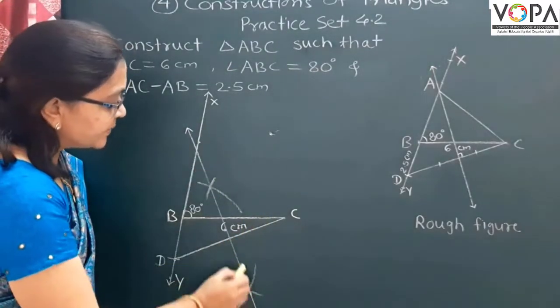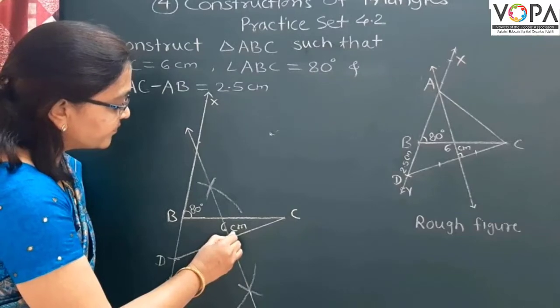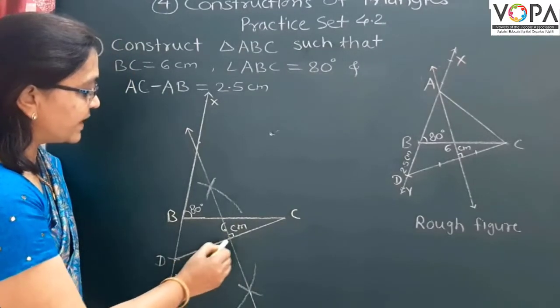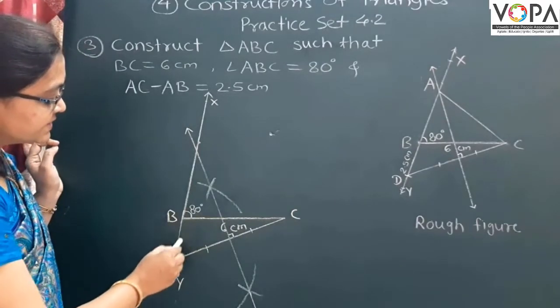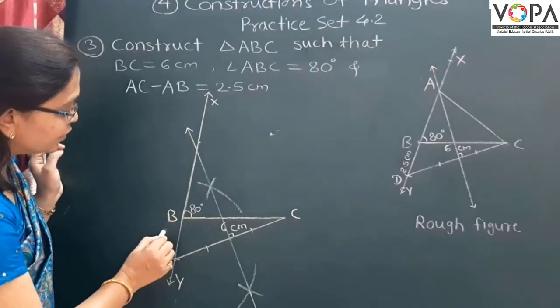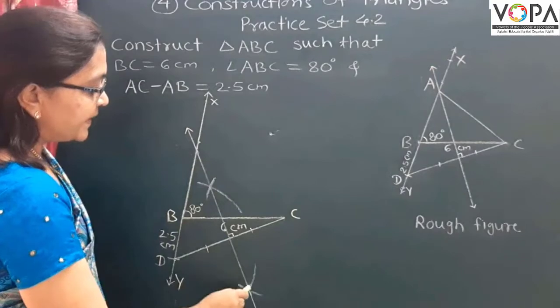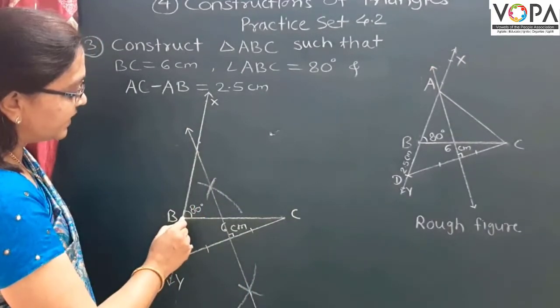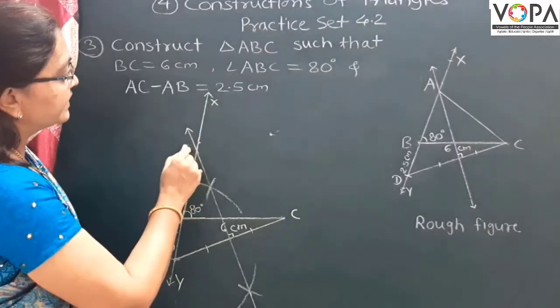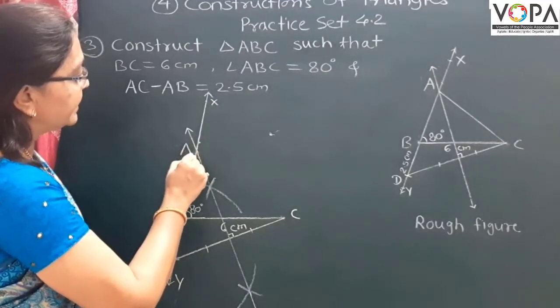Now, this one is the perpendicular bisector. Again, this distance is 2.5. This perpendicular bisector intersects ray BX. At this point, this is point A.